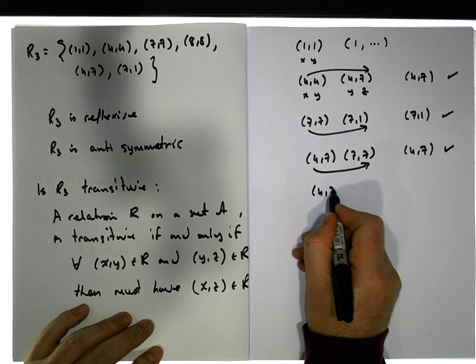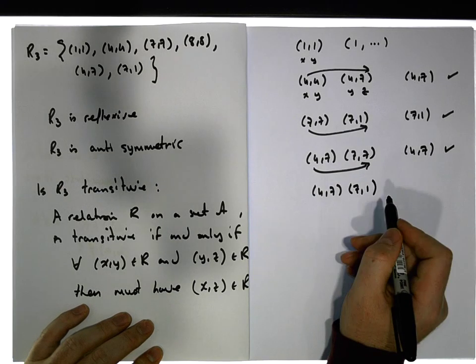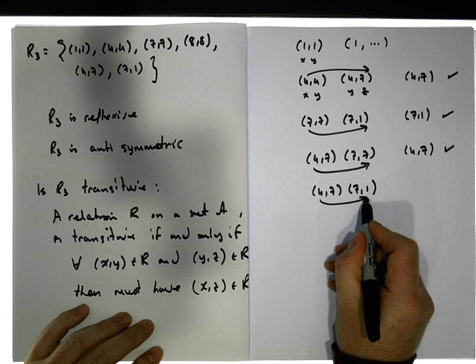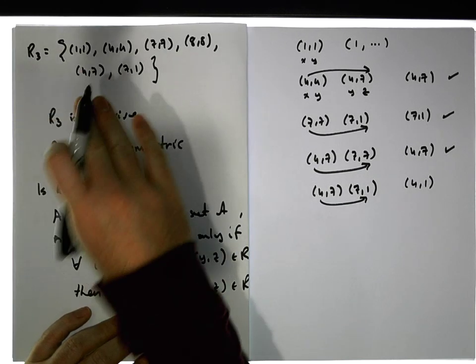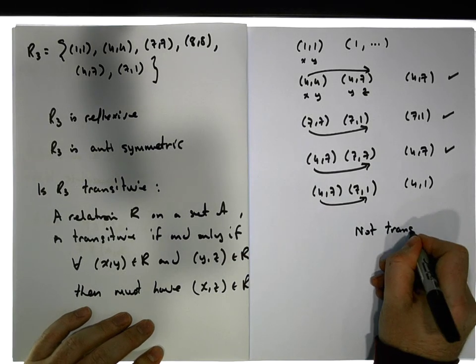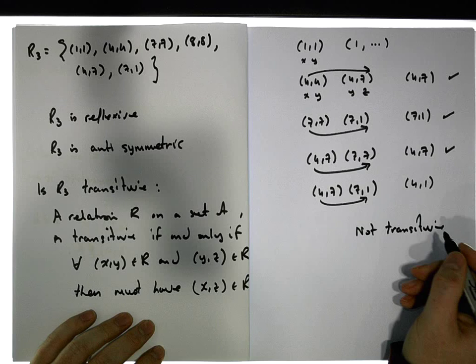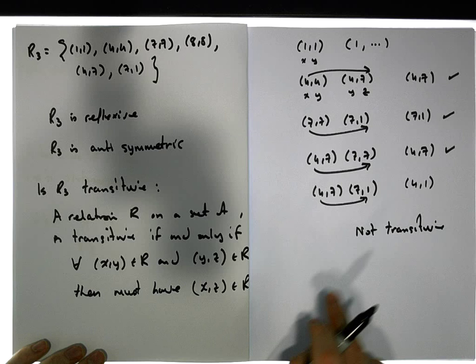But four, seven can also be lined up against seven, seven, one. And the question is, can I go from four to one? Well, I can't go from four to one in this relation. So this relation here at present is not transitive. It's not transitive. So hence, this relation is not a partial order. But we can try to make it transitive.